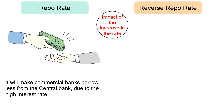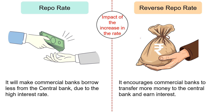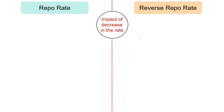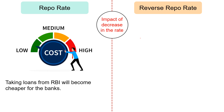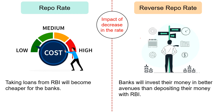Regarding the impact of an increase in the rate: an increase in the repo rate will make commercial banks borrow less from the central bank due to high interest rates. Whereas, an increase in the reverse repo rate will encourage commercial banks to transfer more money to the central bank and earn interest. Regarding the impact of a decrease in the rate: as the repo rate decreases, taking loans from RBI will become cheaper for banks, and as a result, loans will be available to the general public at economical rates. A decrease in the reverse repo rate will make banks invest their money in better investment avenues rather than depositing with RBI, because of the low interest rate.